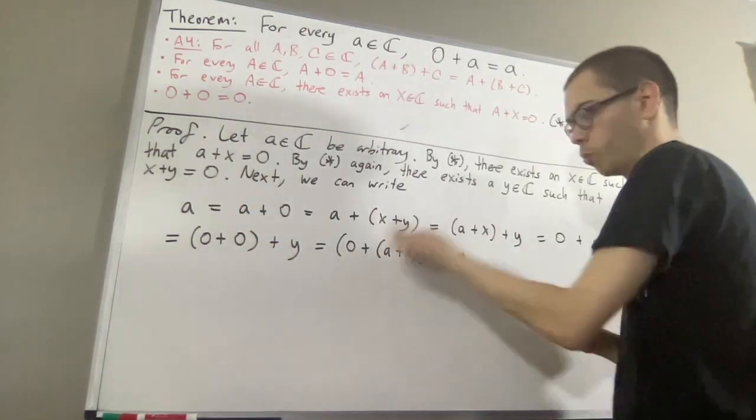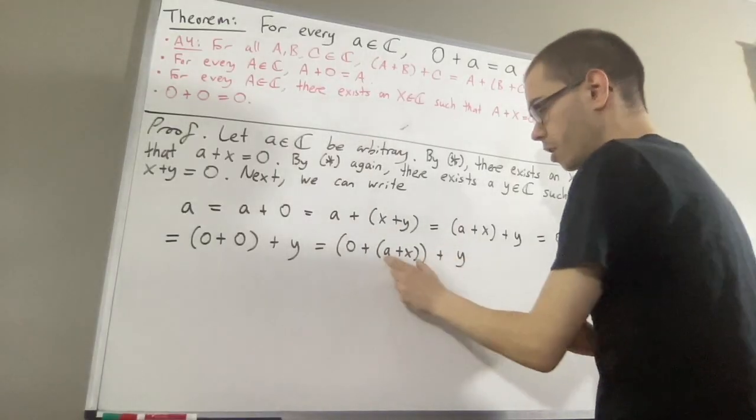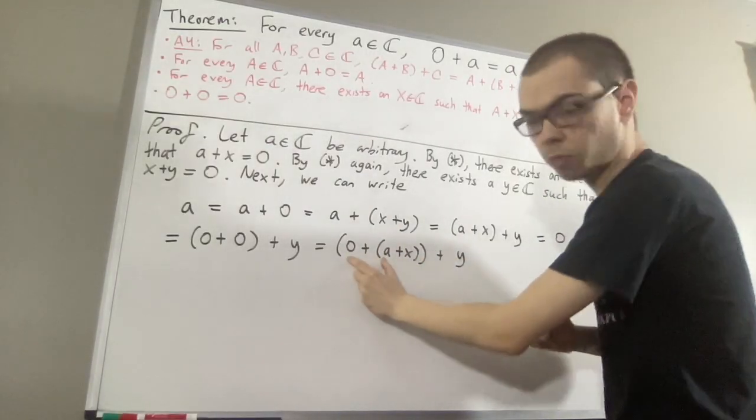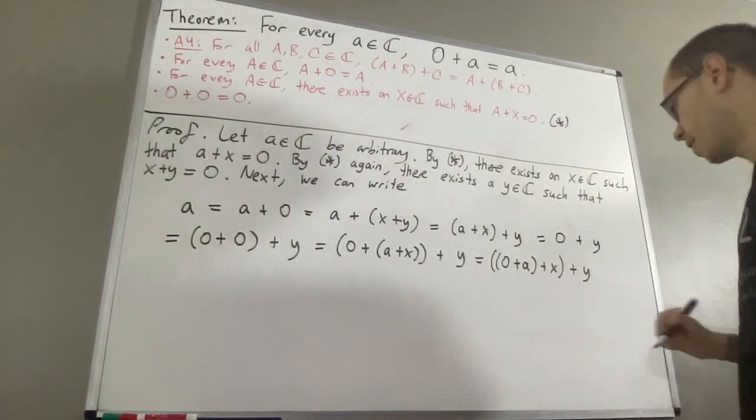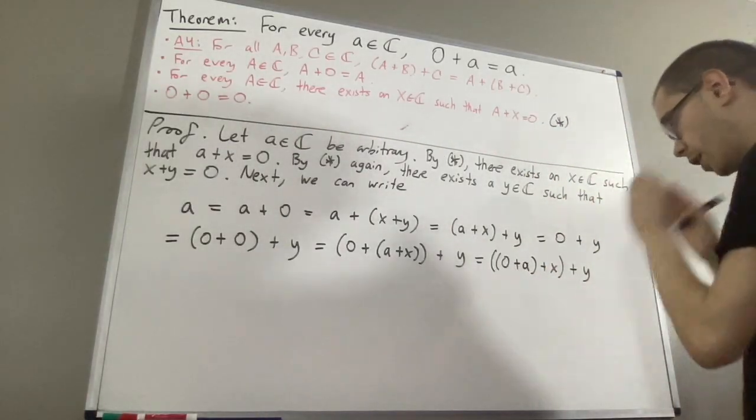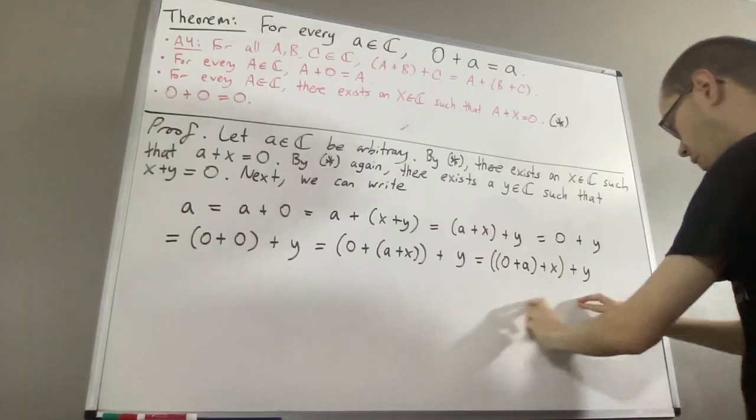And now what we're going to do is, we're going to apply the associative law once again, move these parentheses around 0 plus a. And then, applying the associative law again, we move the large parentheses around x plus y.